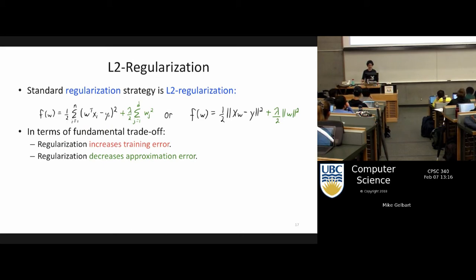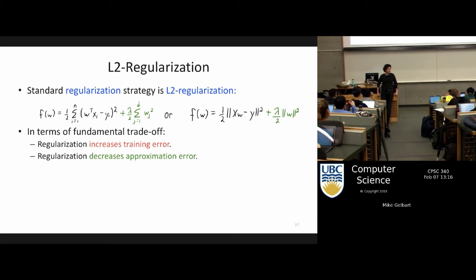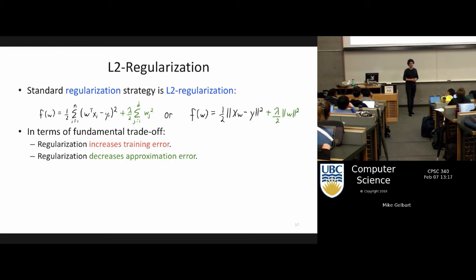In terms of the fundamental trade-off: lambda increases training error. Since we've already talked about optimization, you're now equipped to appreciate why — before, our loss was literally the training error without the regularization. So we were minimizing with respect to W the training error, getting the lowest possible training error. How could it be better if I just start messing with the loss? Now I'm minimizing some other function — how could that be better than the best thing? That's why training error goes up. Why test error goes down is not so clear, and that we need to talk about.